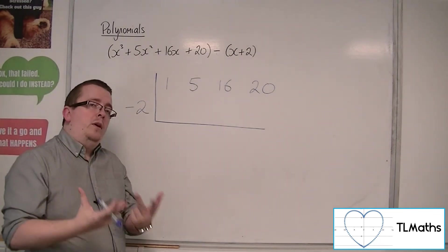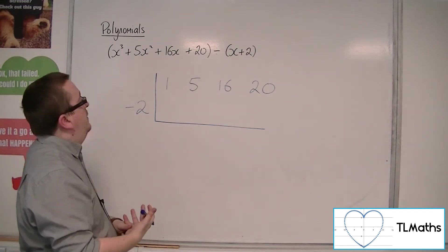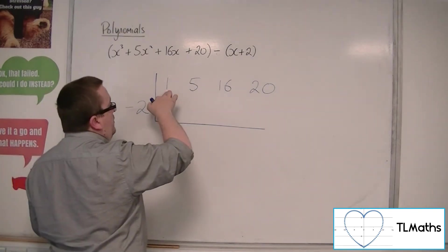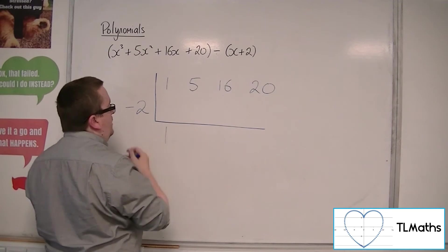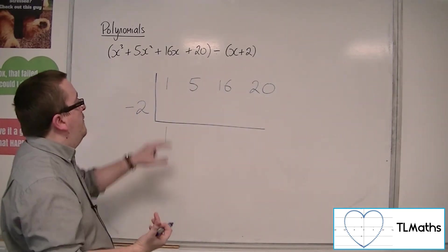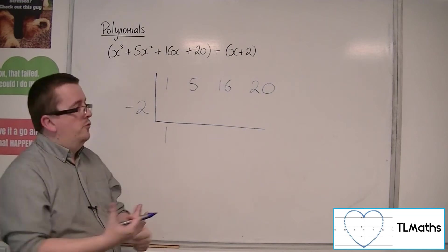Now the first step in using the synthetic division method is to bring this number down to the front. So we bring the 1 down. So if it was a 2, we'd bring down 2, for example.